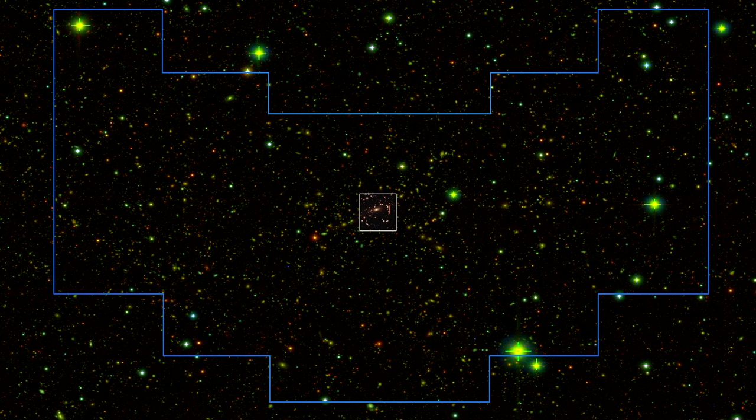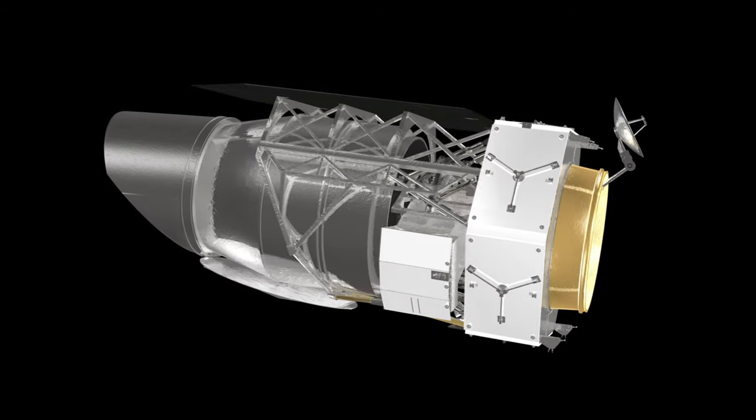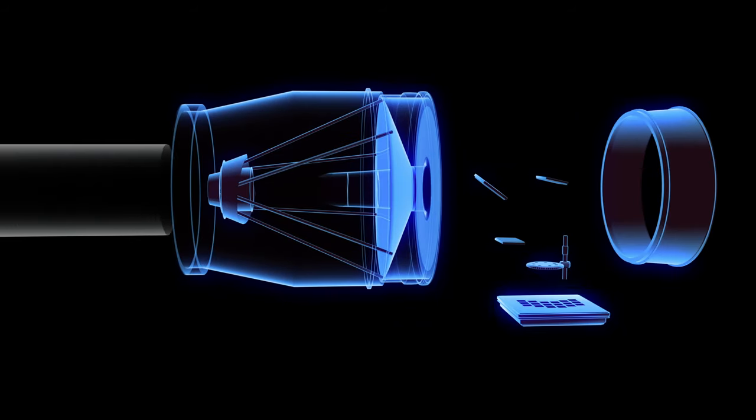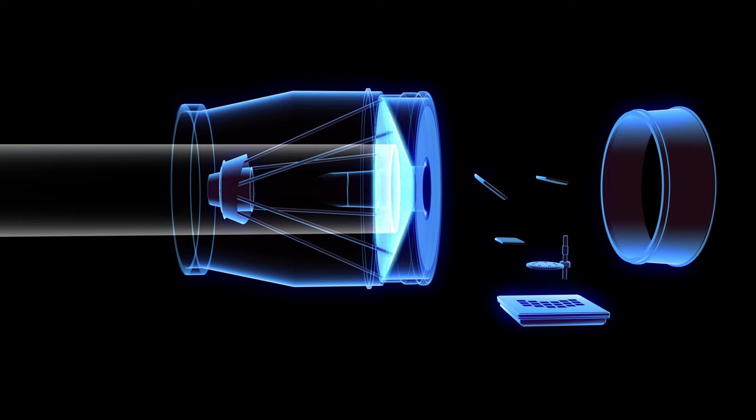Despite this incredible power, the basic design is the same as telescopes around the world. Light enters through WFIRST's 2.4-meter aperture and is reflected and focused by the curved main mirror, which is also the largest mirror in the telescope.